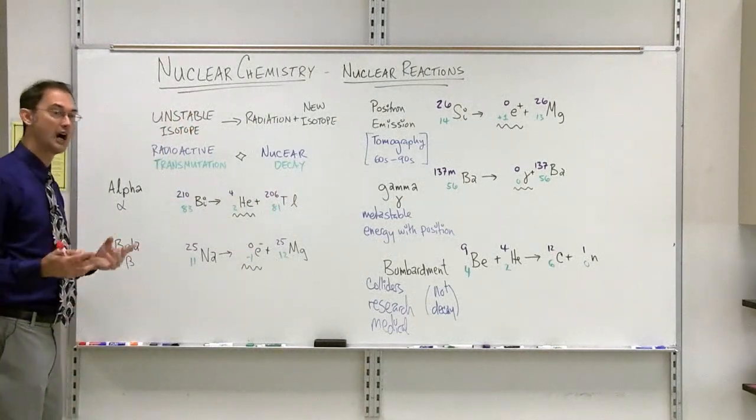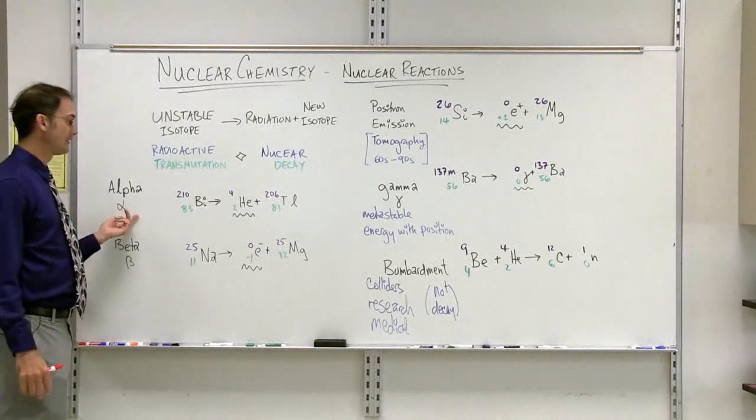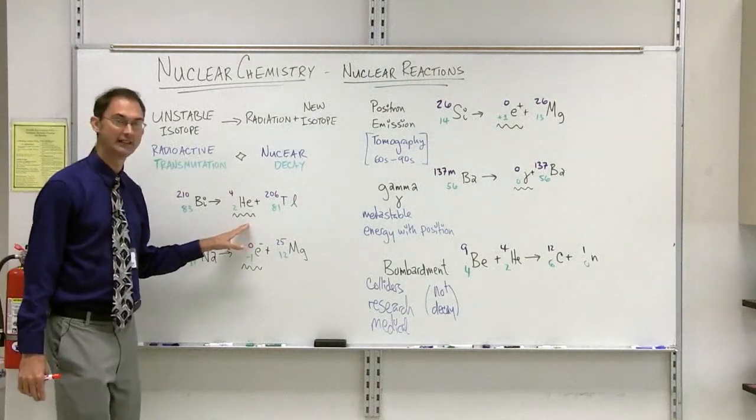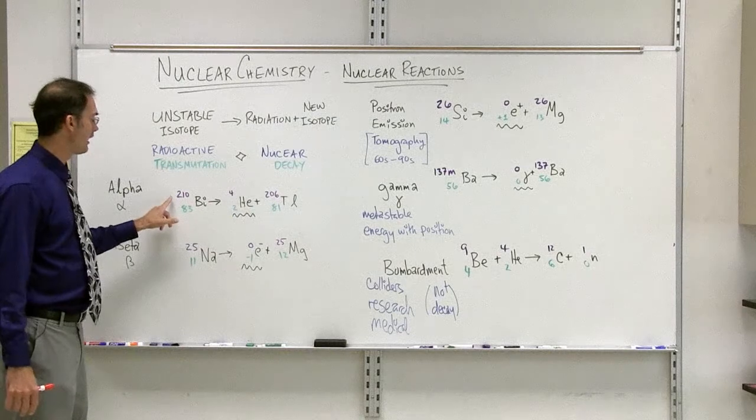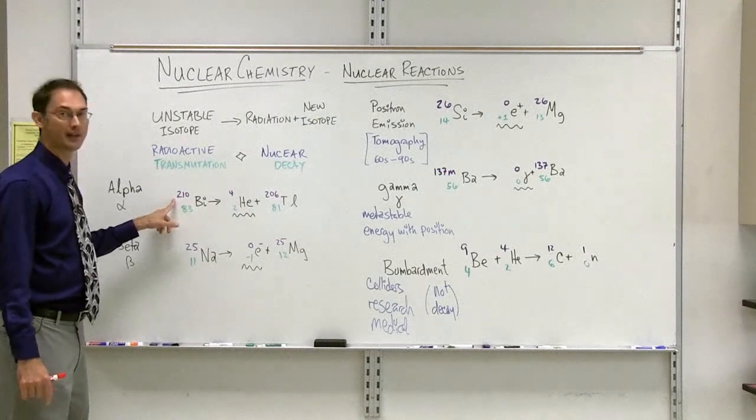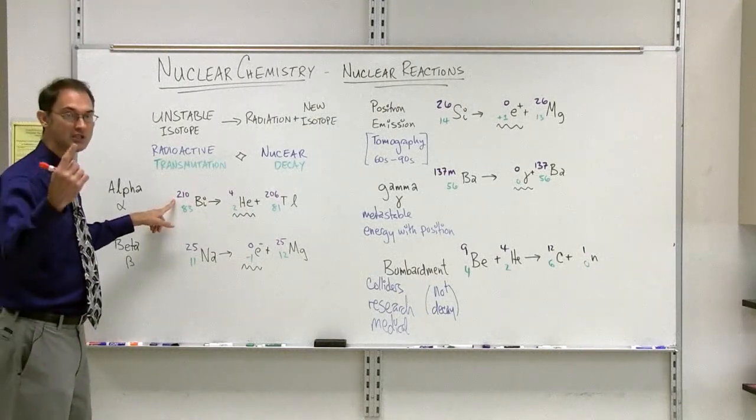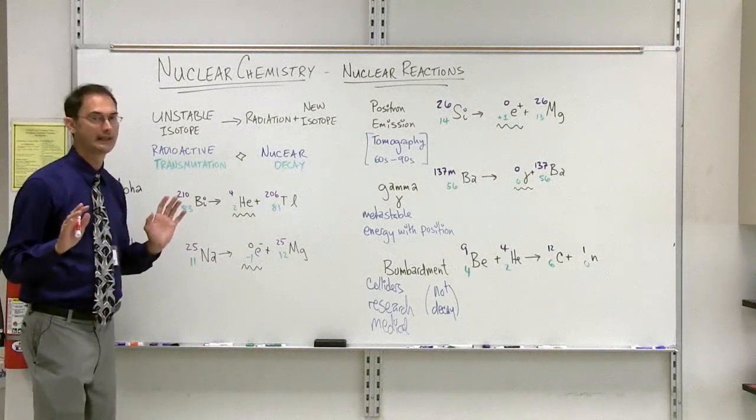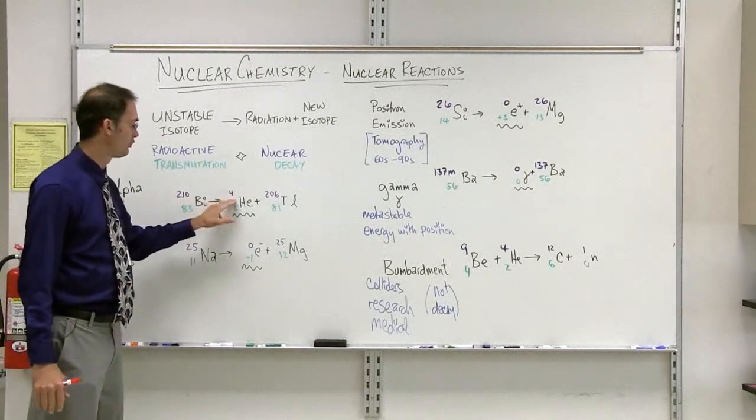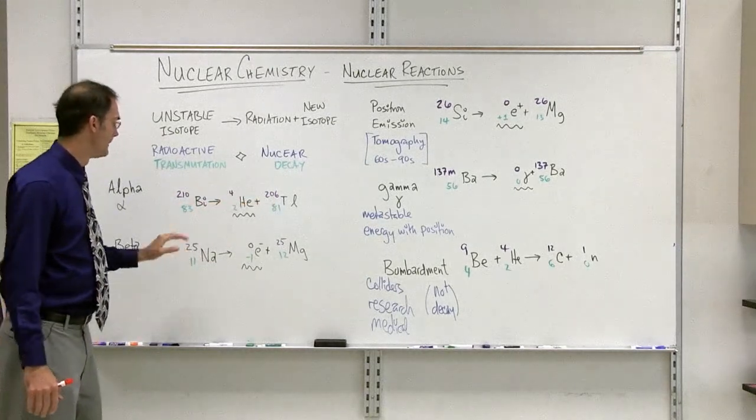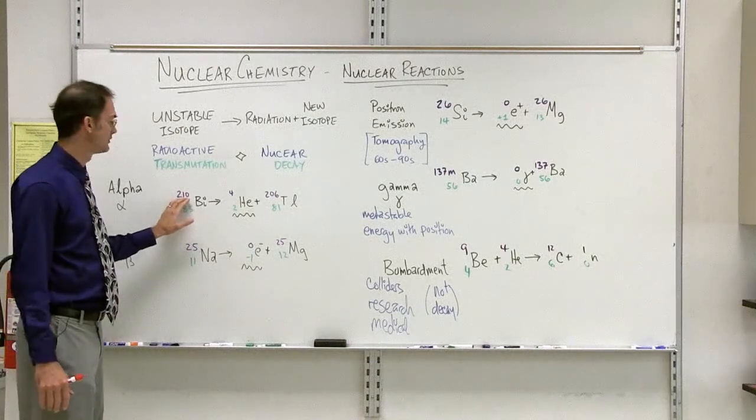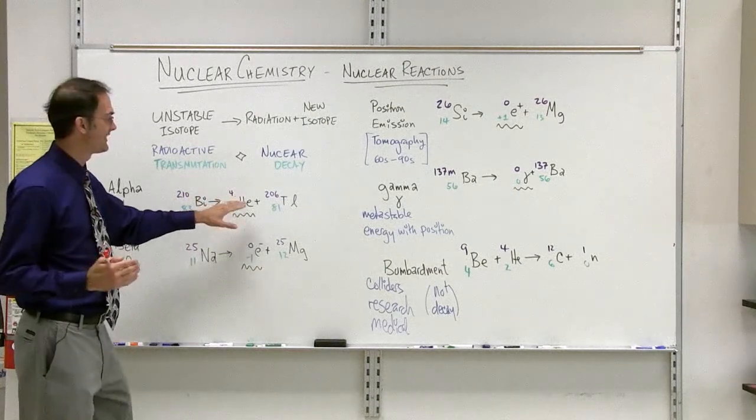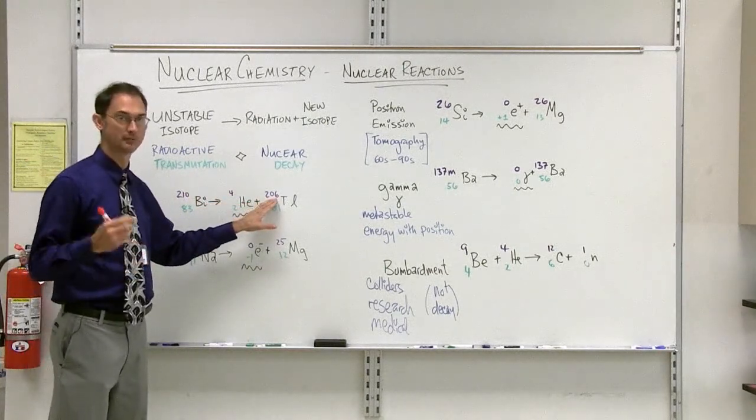First of all, the most common is the alpha decay. An alpha decay is a case when an alpha particle is emitted. An alpha particle is simply a helium nucleus. If you take a look at the numbers written up high, we have the atomic mass number, which is the combination of protons plus neutrons. Here you can see that the numbers always add up like in a chemical reaction. 210 equals 4 plus 206. Bismuth has a total number of protons and neutrons equal to 210. Helium has 4 protons plus neutrons, and thallium has 206 protons plus neutrons.